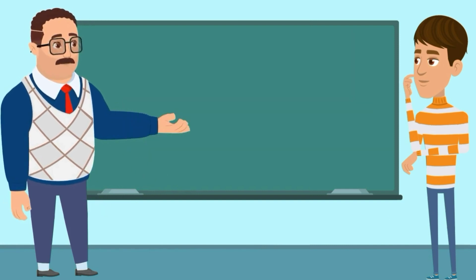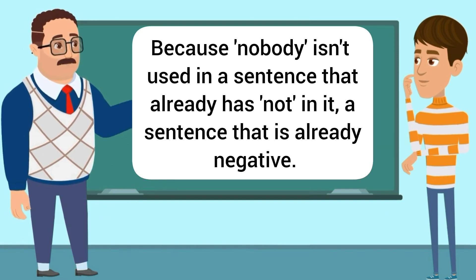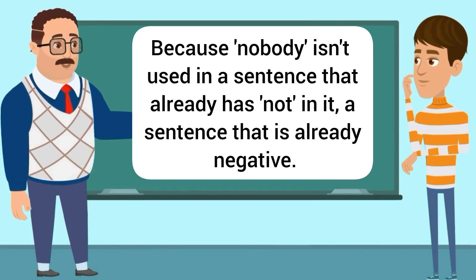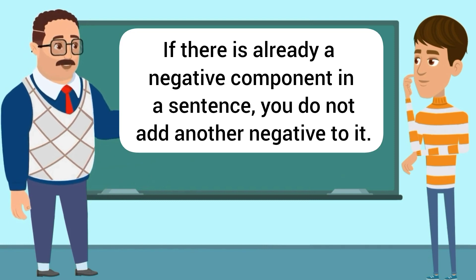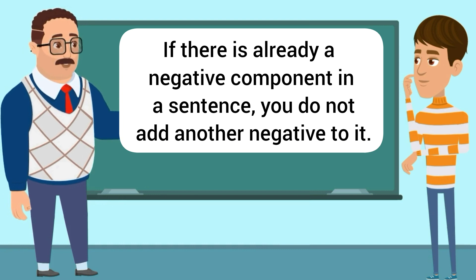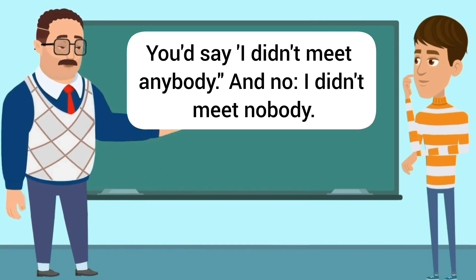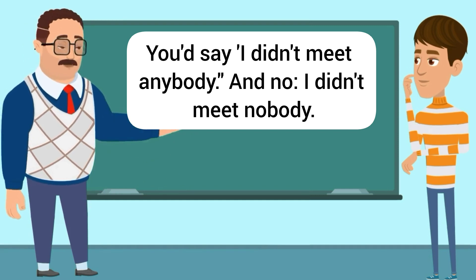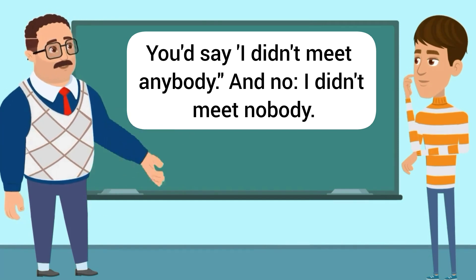I will tell you why. Because 'nobody' isn't used in a sentence that already has 'not' in it — a sentence that is already negative. If there is already a negative component in a sentence, you do not add another negative to it. You'd say 'I didn't meet anybody,' not 'I didn't meet nobody.'